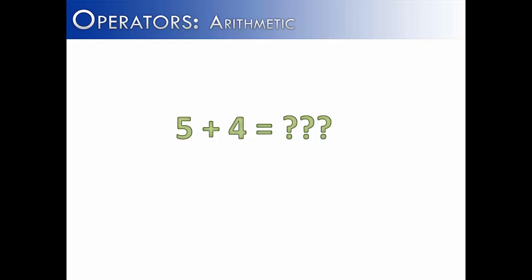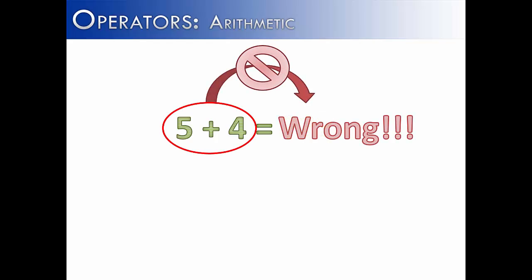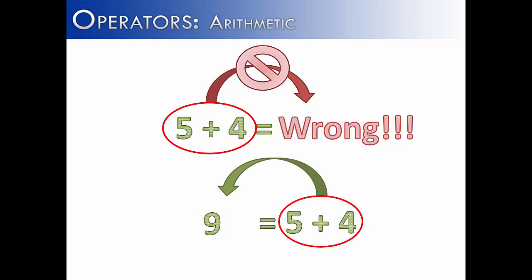Let's take a moment to look at this expression: 5 plus 4 equals something. If you were in math or doing some kind of algebra, this would be fine. But in Java, this is incorrect. You never go from the left side, do some kind of operation, and then assign it into the right side. You always go from the right side and assign it into the left — so some variable would be assigned to 9. Never assign from left to right, but right to left. If you try to assign from left to right, it will produce an error.